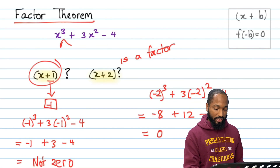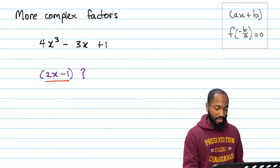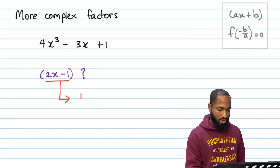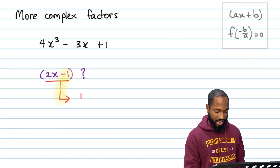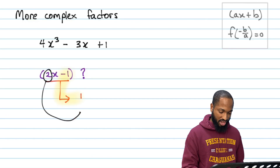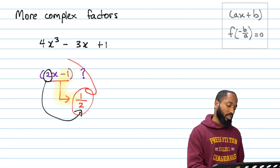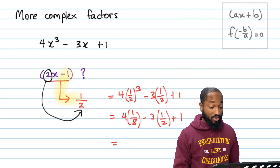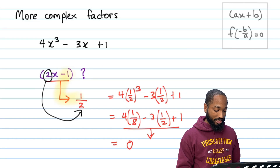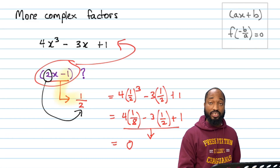It could get a little more complicated — the factors could look like ax plus b. Originally, if it was x plus b you substitute negative b into the function, but if it's ax plus b, this number needs to come and live under there. So change the sign to get positive one-half, and substitute the half into the original equation. You can verify using your calculator that this boils down to zero, meaning it is indeed a factor of this expression.